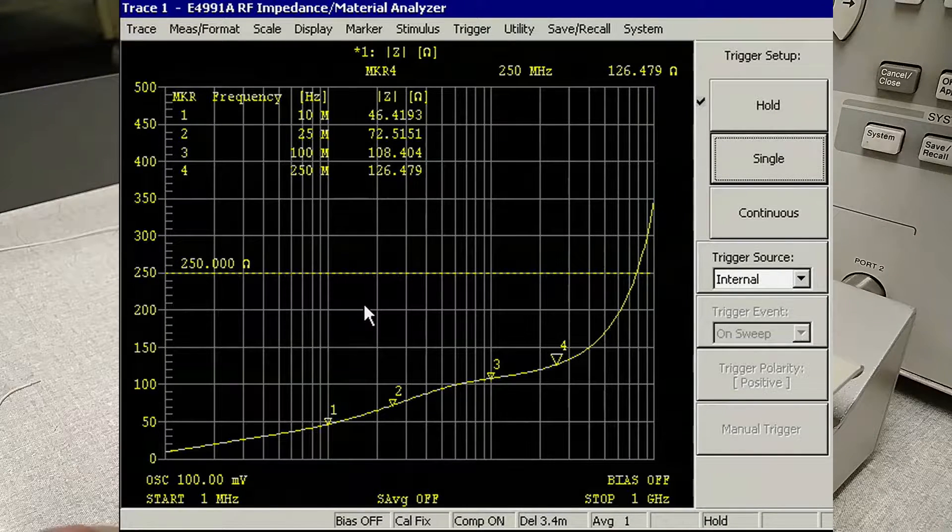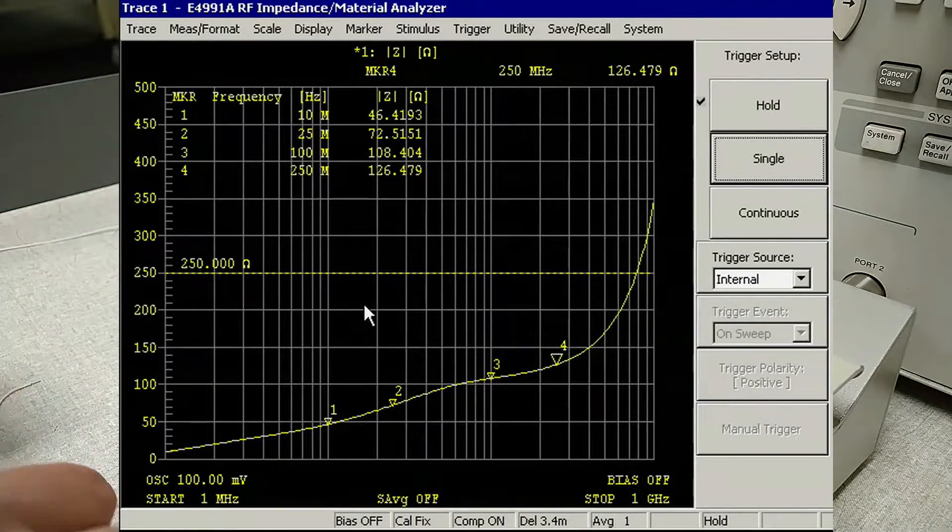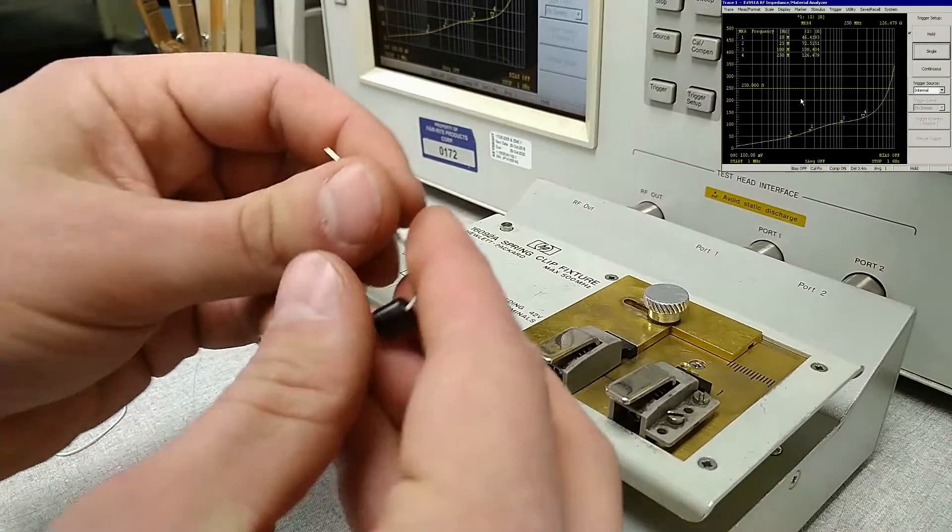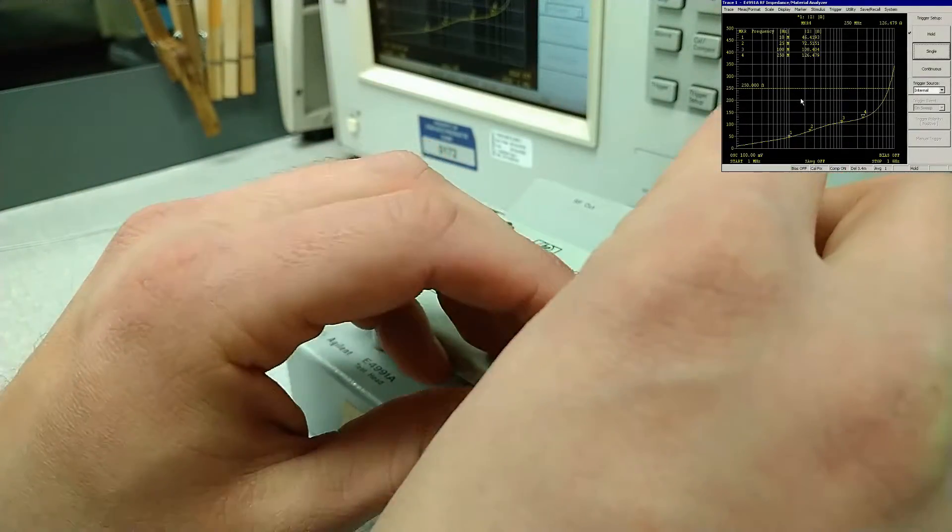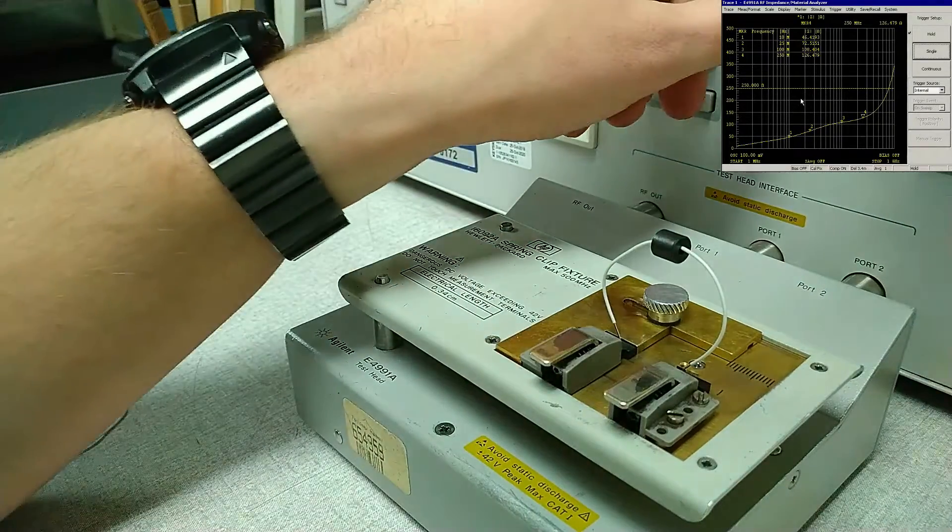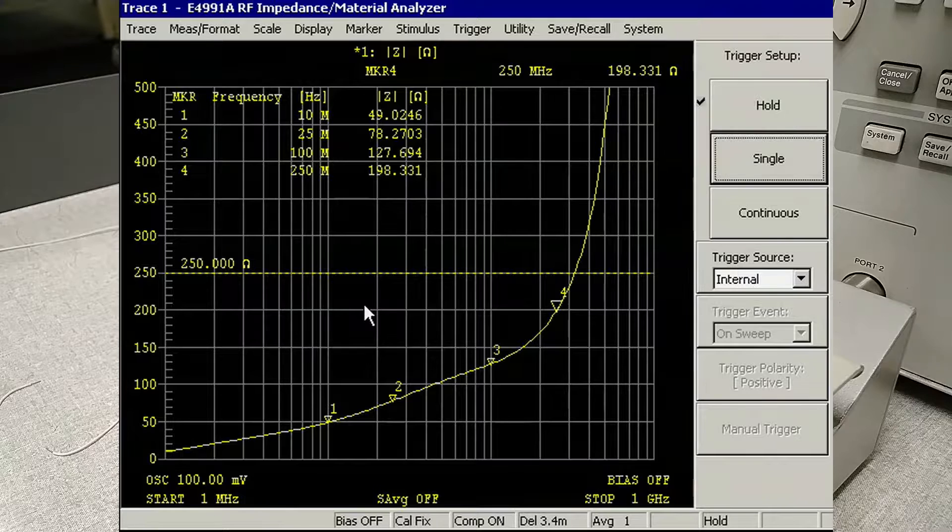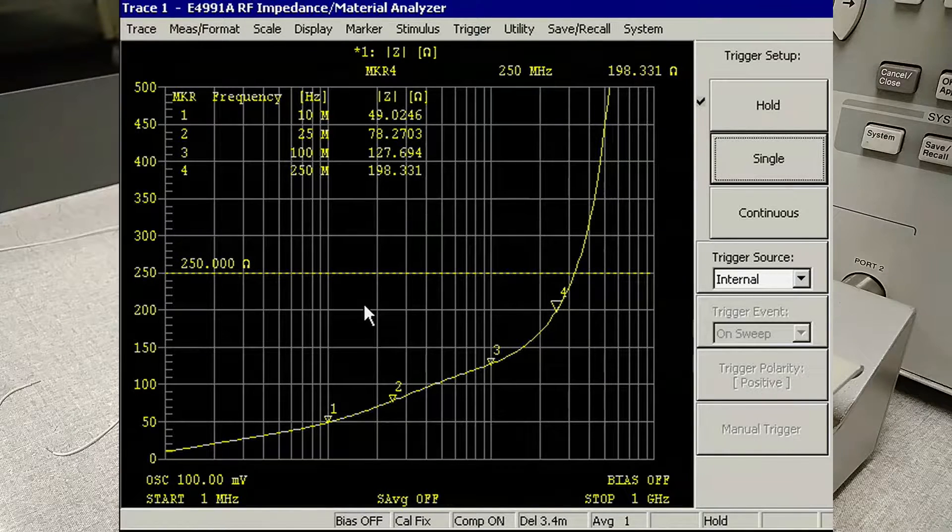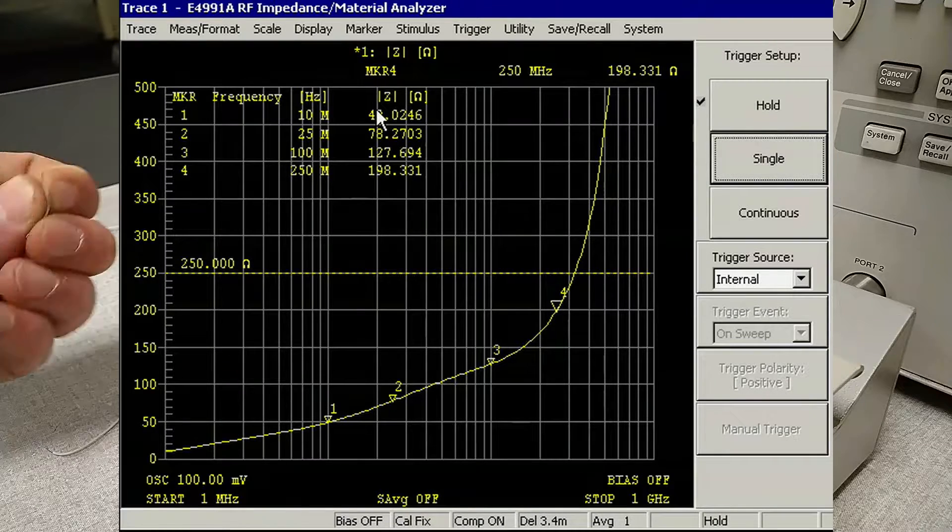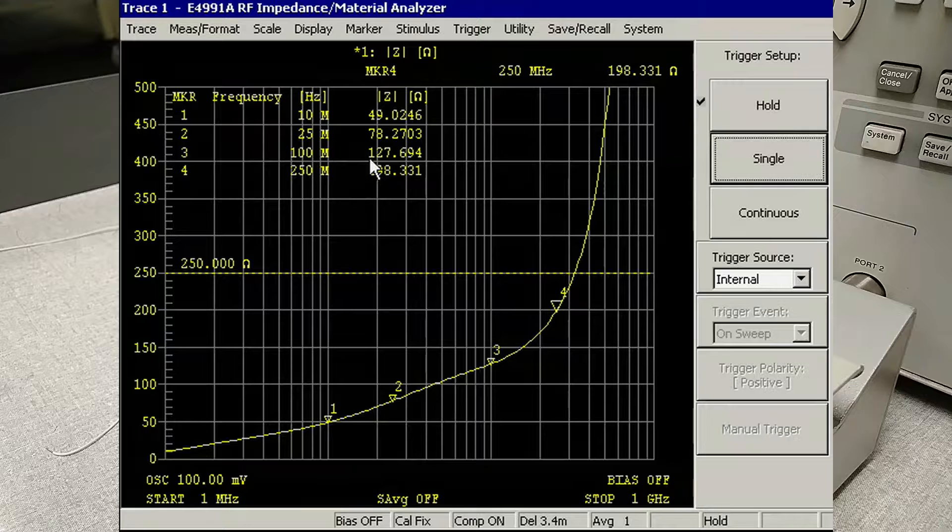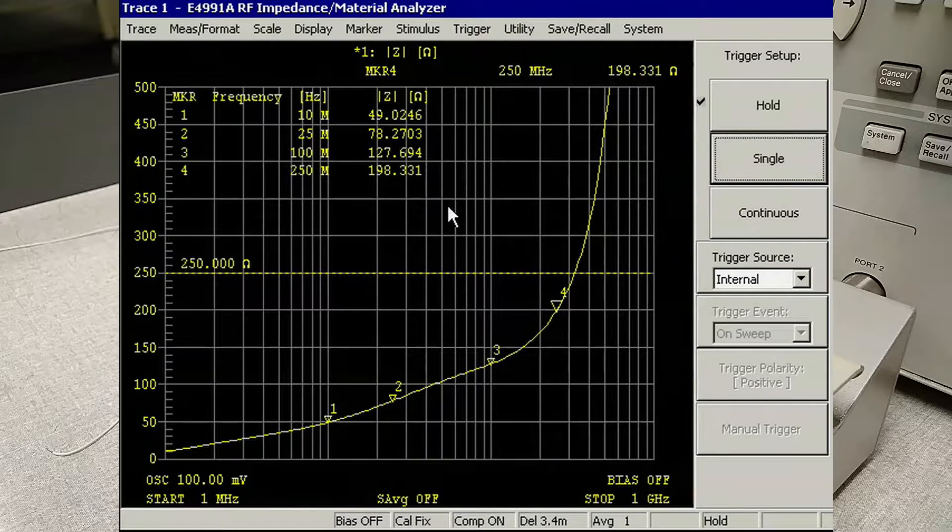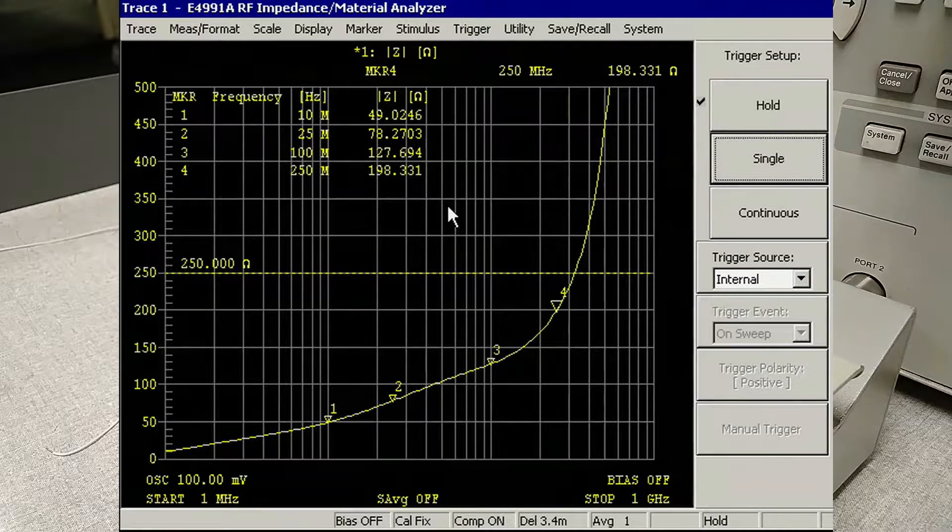So let's see what happens if we go up further still to a 102 millimeter wire length. Now we're starting to see a little bit of an increase at 10 and 25 megahertz, though still fairly comparable to what we had with the original test lead. The 100 megahertz is now nearing 30% increase in impedance. And the 250 megahertz we are nearing double what we had originally measured with the 25 millimeter wire length.